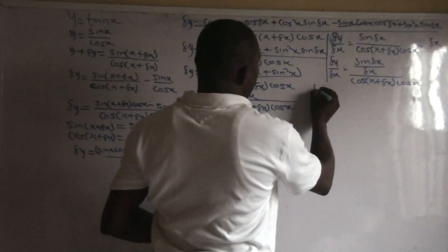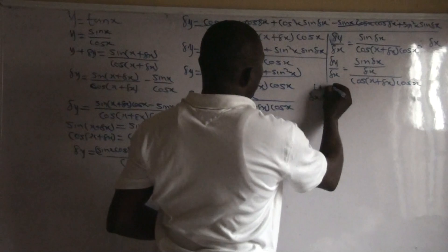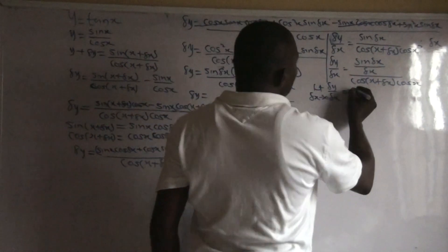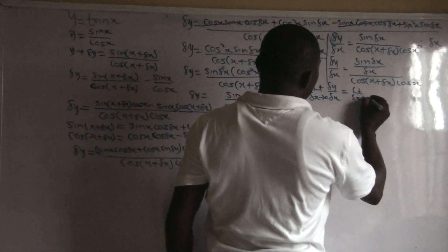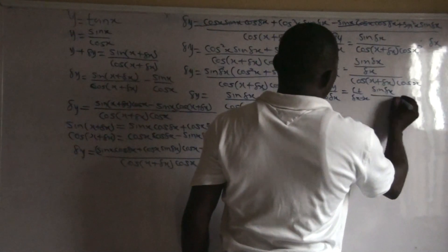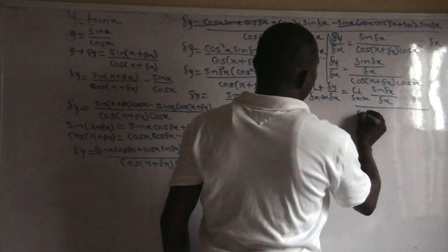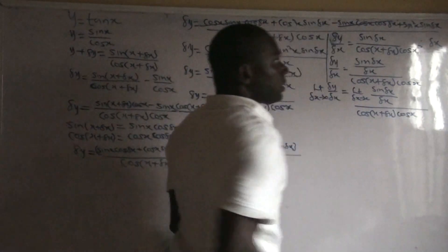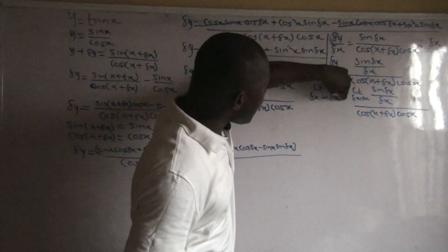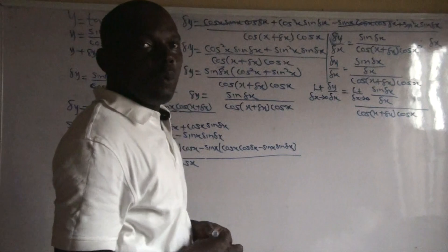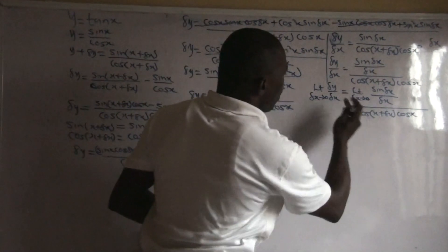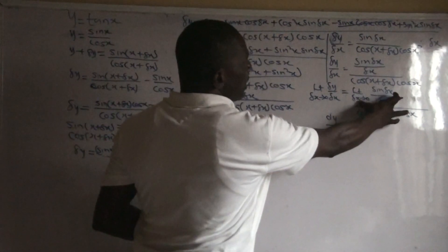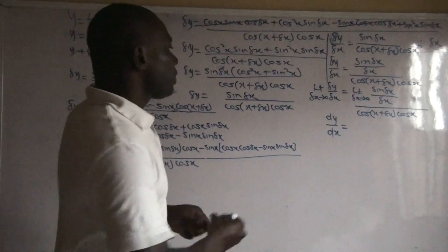Applying the principle of limits, as delta x tends to 0 of delta y over delta x, we take the limit of sin(Δx)/delta x, and similarly as delta x tends to 0, cos(x + Δx) approaches cos x. The limit of sin(Δx)/delta x in radians gives us 1.